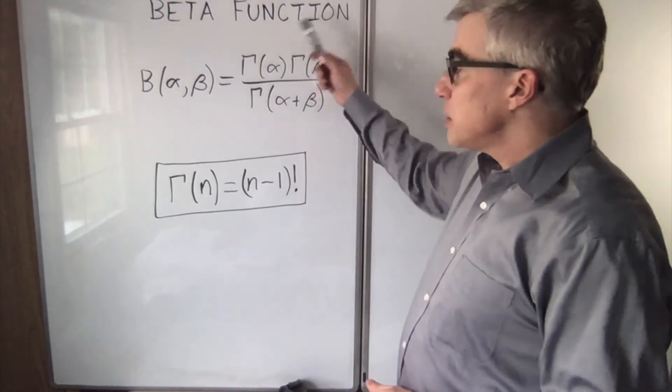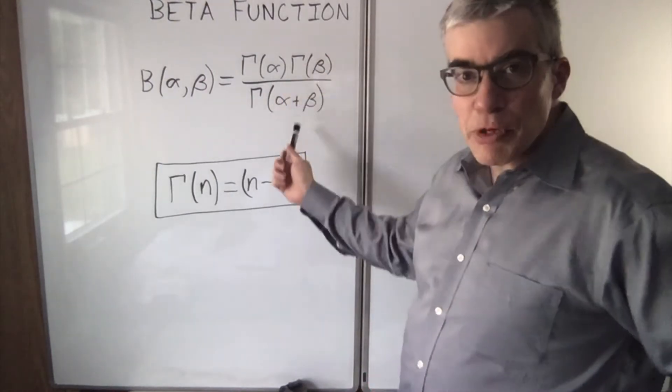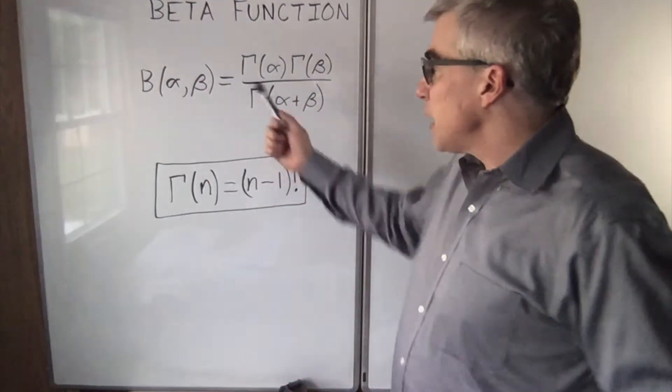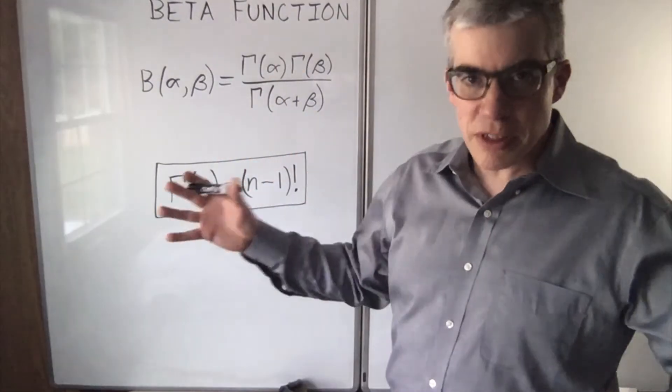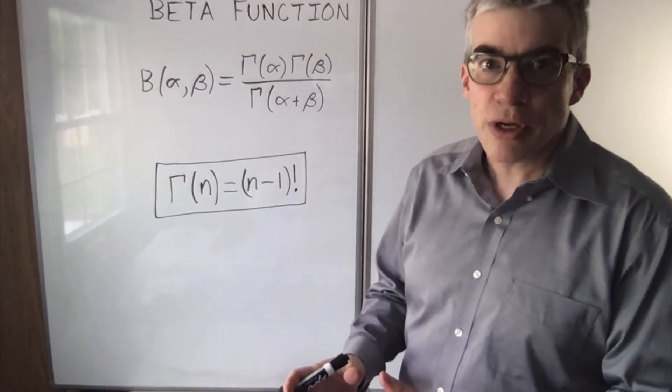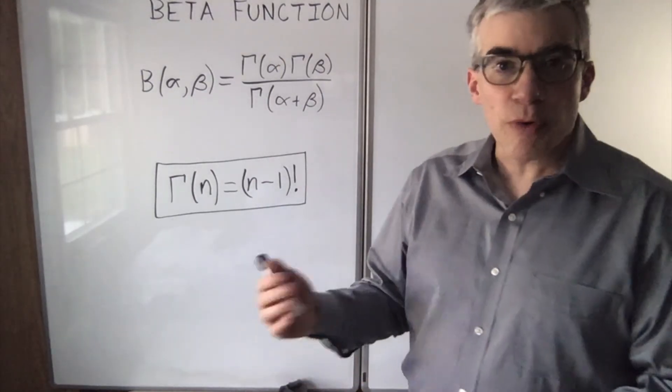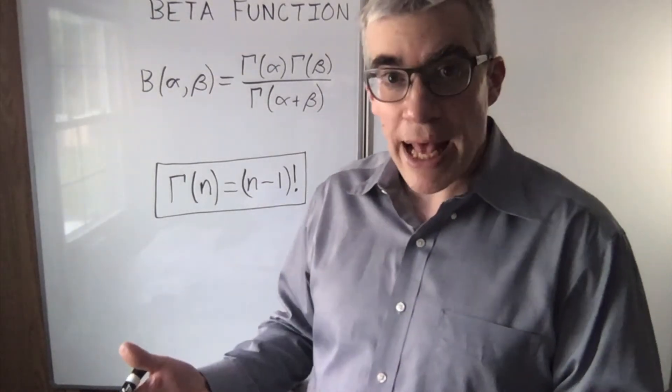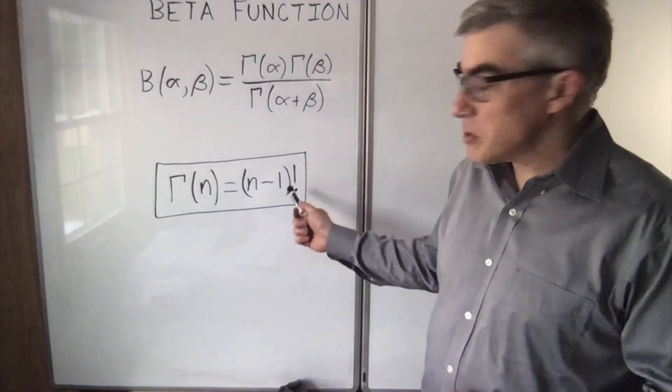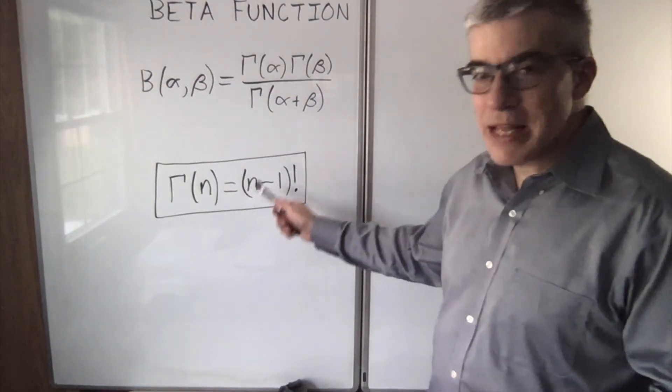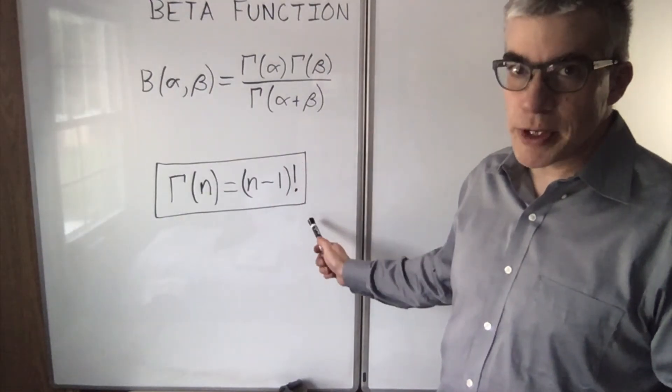There's even a beta function, which is 3 gamma functions combined. If alpha and beta are positive integers, this is a whole lot of extra work for nothing, because this will boil down to a simple fraction. And also if alpha or beta is an integer plus 1 half. But the single most important thing to remember about gamma is gamma of n is n minus 1 factorial.